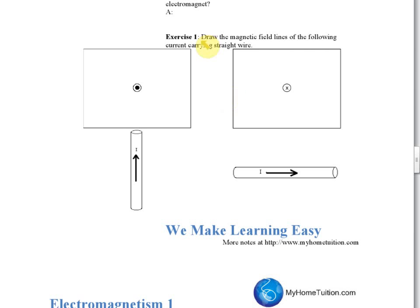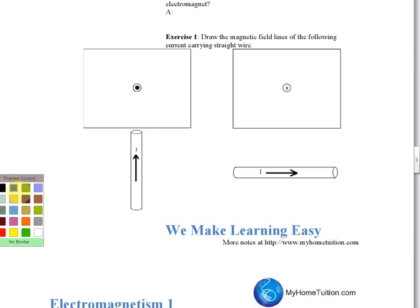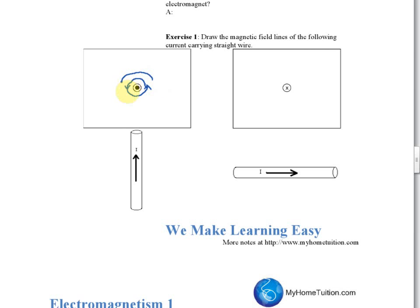Exercise one asks you to draw the magnetic field lines for current-carrying straight wires. When drawing magnetic field lines, you need to show three things: first, the pattern, which is concentric circles for a straight wire; second, the direction, which you determine using the right-hand grip rule — for a current going up it is counter-clockwise; and third, the strength.